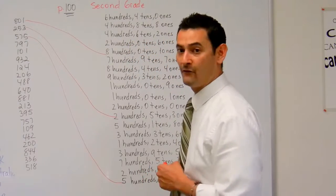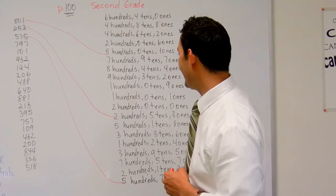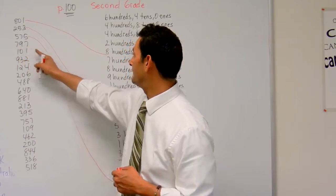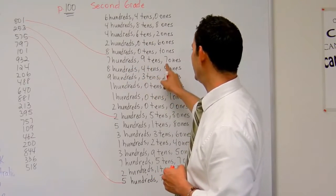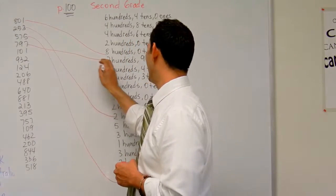The next one, number four, we have 797. Seven hundreds, nine tens, seven ones. Let's find that here. Seven hundreds, nine tens, seven ones. Yep, that's it. I'm going to connect that.